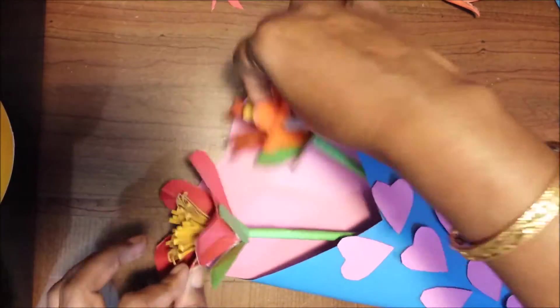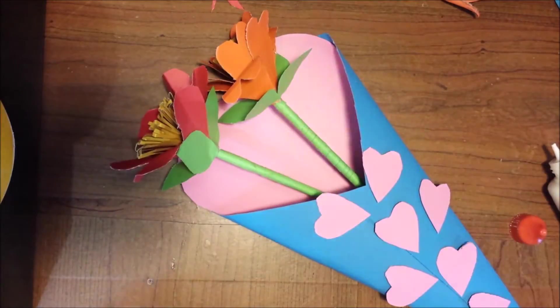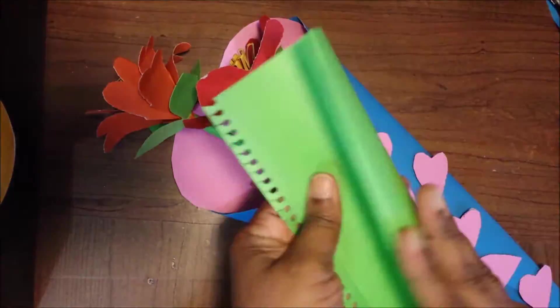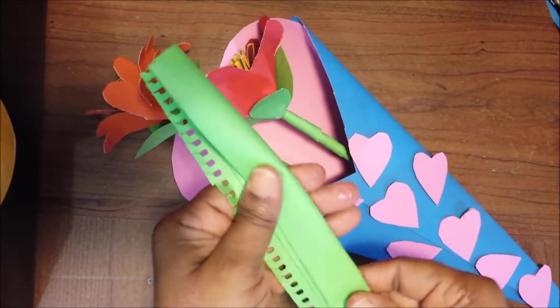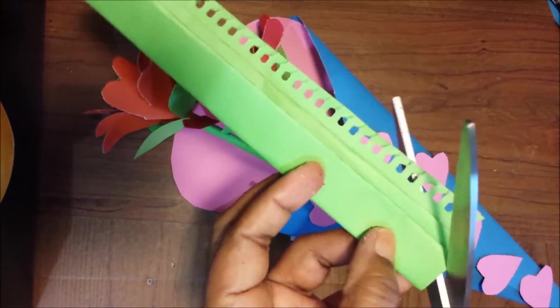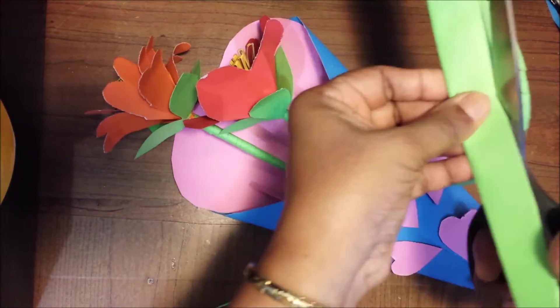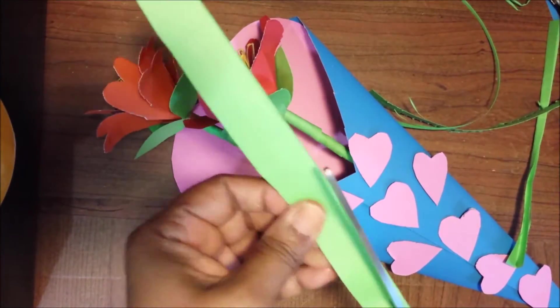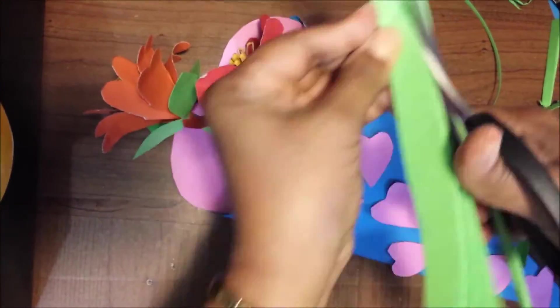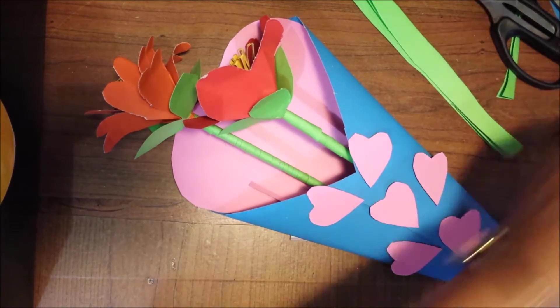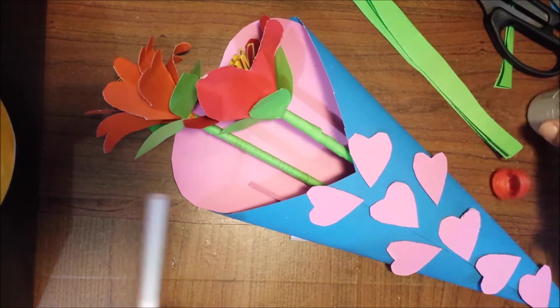However you can arrange it, arrange it. You can make more leaves or paper strips, whatever design you can do it. If you want to stick it on the straws, you can stick. Otherwise, simple, just put little glue and stick it inside the cone, then finish.